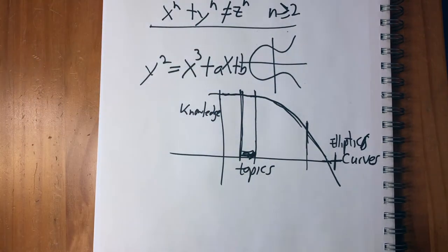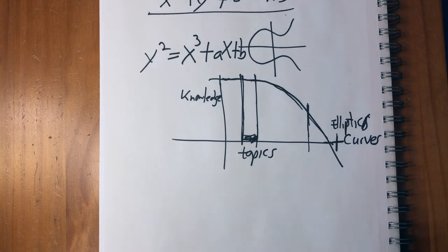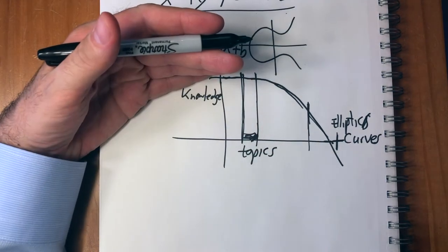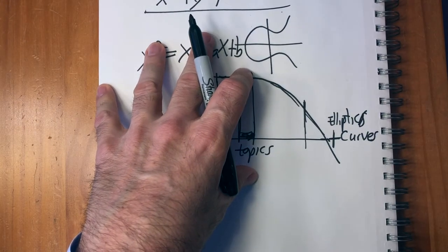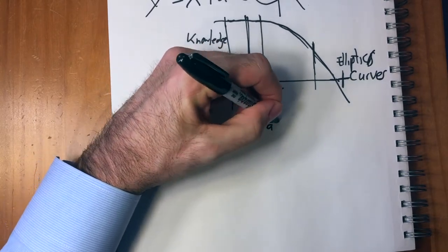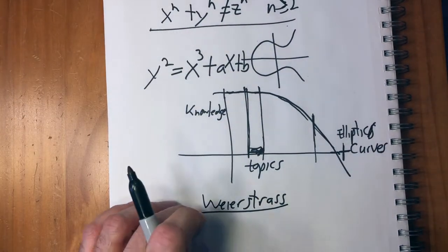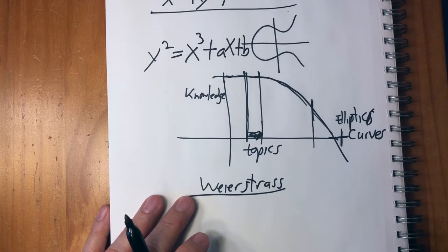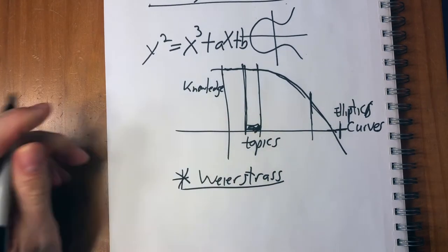I'm going to assume everyone knows basic high school math — algebra, polynomials, and probably calculus reasonably well. Where I'm going to start is with multi-variable calculus and complex numbers. This series of videos is going to cover complex numbers leading to something called the Weierstrass equation, which sounds obscure but is actually central to the proof of Fermat's Last Theorem. That will then get us to elliptic curves.